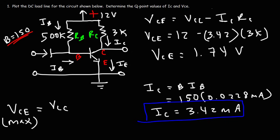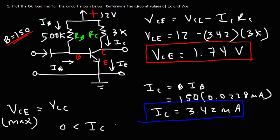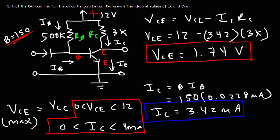This is between 0 and 12, which means this transistor is in the active region. However, it is not centered on the DC load line. IC is close to 4mA, so it's close to the saturation region, and VCE is close to 0, which occurs at saturation. This transistor is far from the cutoff region but closer to the saturation region.